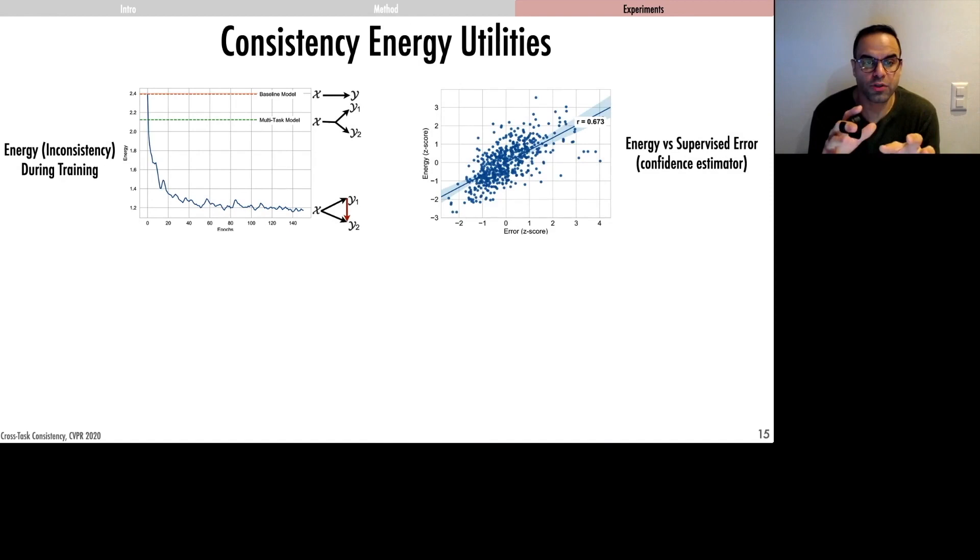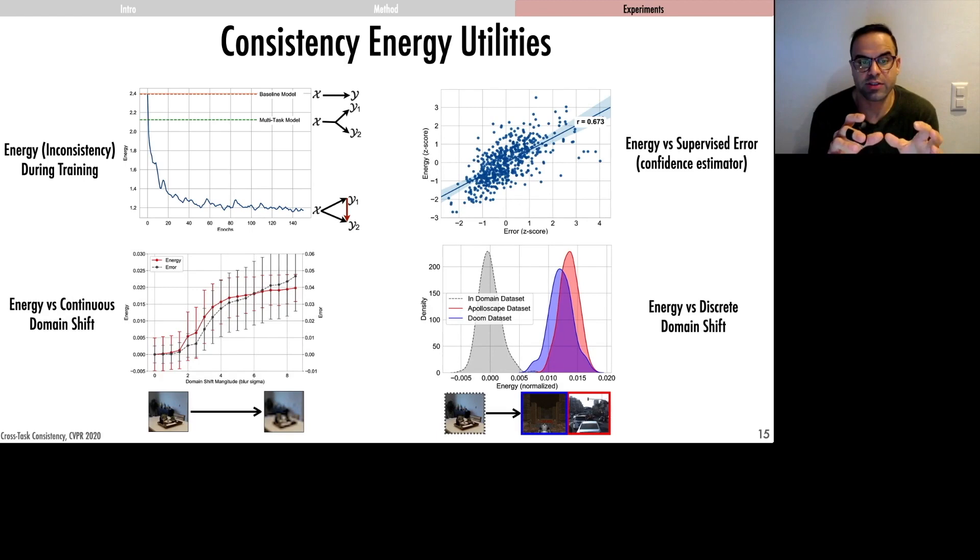This plot shows there is a good correlation between the energy and supervised error, which suggests the energy can be used as a competence estimation. And these two plots show the energy versus various domain shifts, which again suggests the energy can be used as an empirical indicator of domain shift and uncertainty.